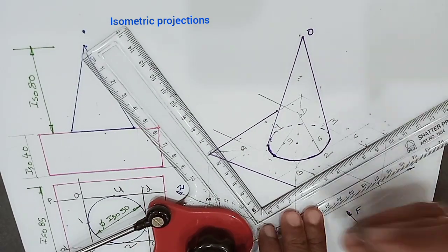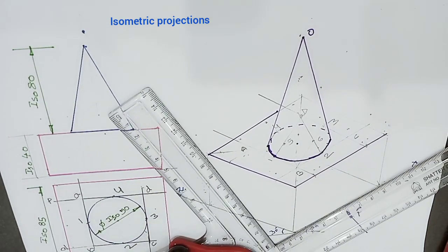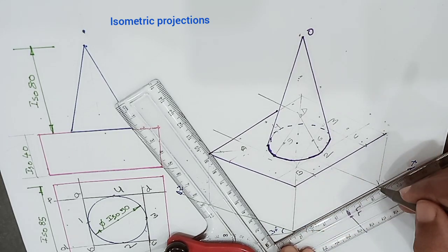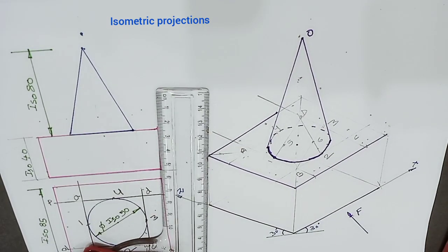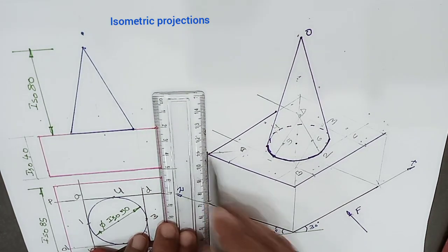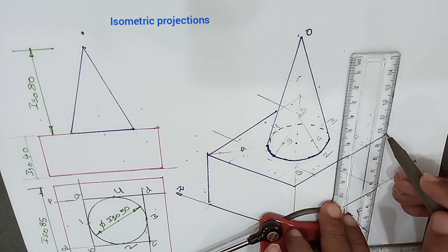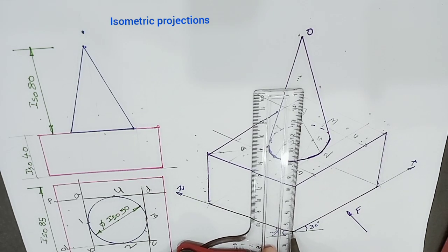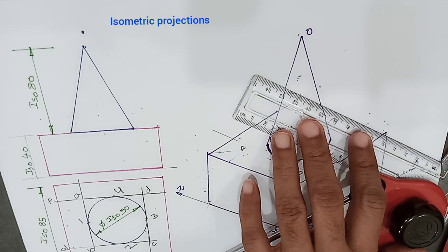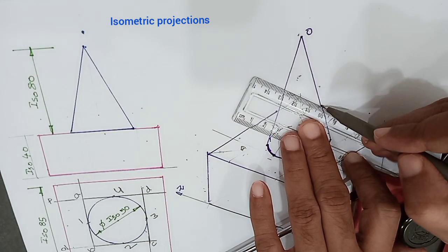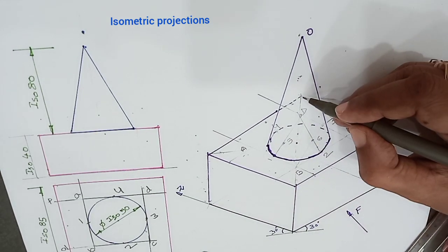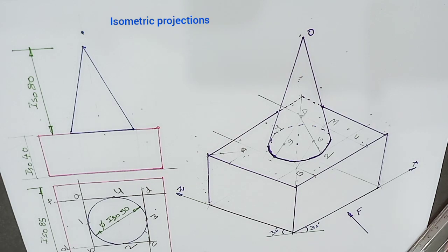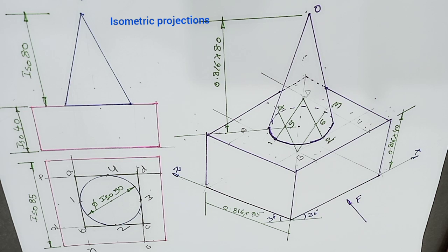That concludes the construction of the isometric projection of a cone resting on a square prism.